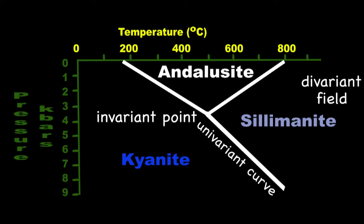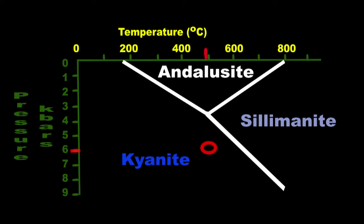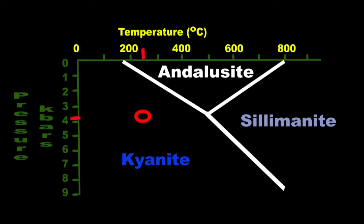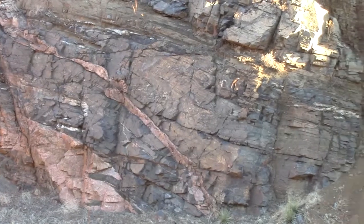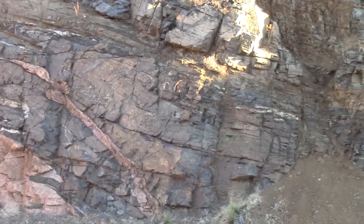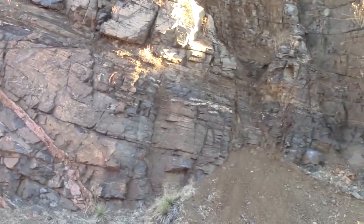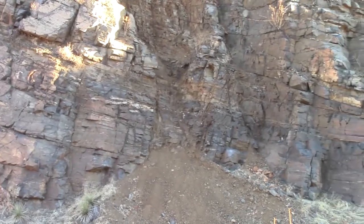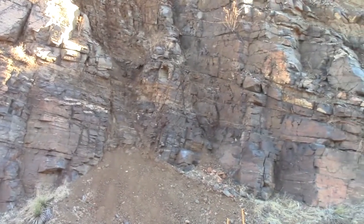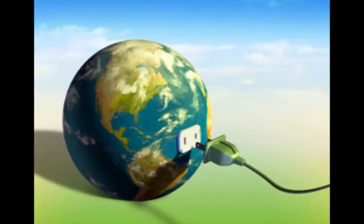We saw univariant, discontinuous reactions, continuous reactions, overstepping of reaction lines, and many other details of how a metamorphic rock ends up in our hands. But as these rocks are generally made below ground where temperature and pressure are higher, we have to ask: what is different about down there that allows these reactions to occur? At the most fundamental level, the answer is energy.